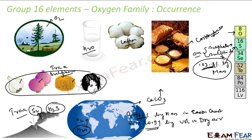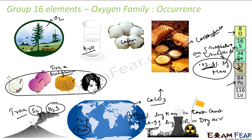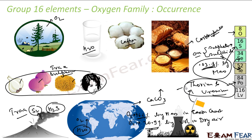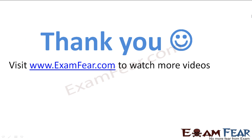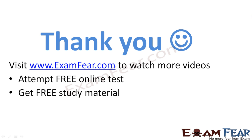Selenium and tellurium are found in metal selenides or tellurides, and they are also found in sulfide ores. They are very rare. Polonium actually occurs as a nuclear particle — it occurs as the product of the decay of thorium or uranium. Thank you. Visit examfear.com to watch more videos, attempt free online tests, get study materials, find tutors and mentors, and much more.